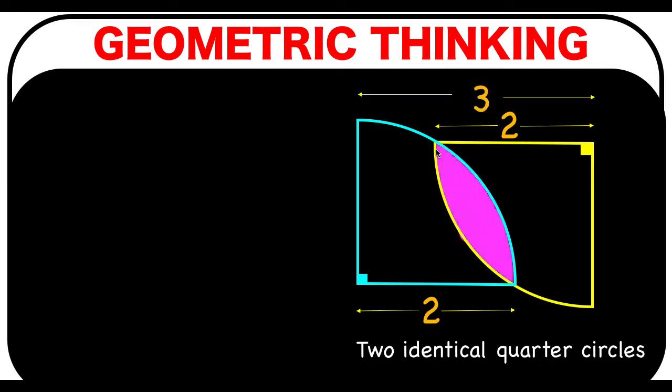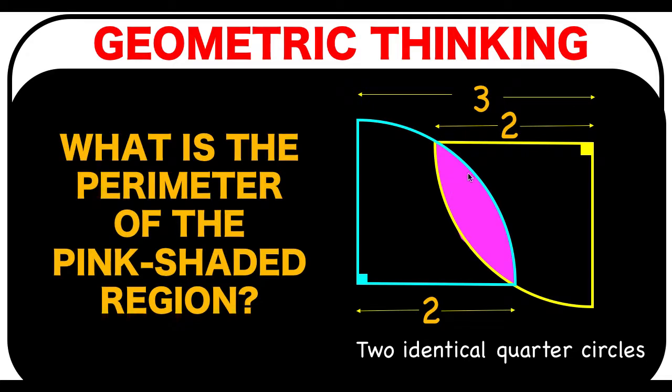We would like to find the perimeter of this pink shaded region. So with respect to these two points of intersections, we would like to find the length of this blue arc and this yellow arc. You can pause the video and see if you can solve this math problem.